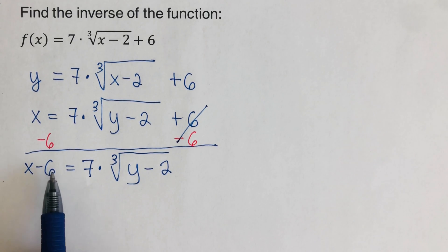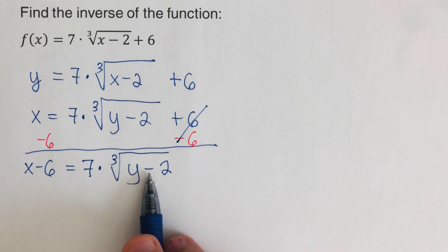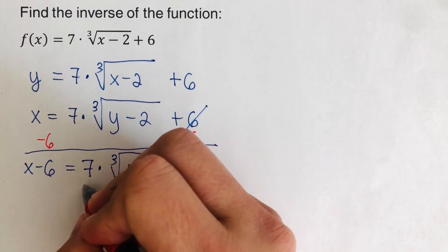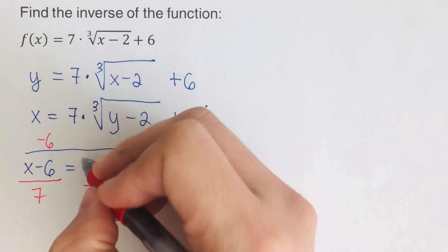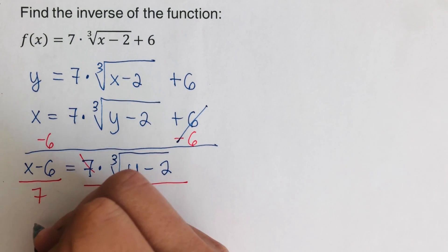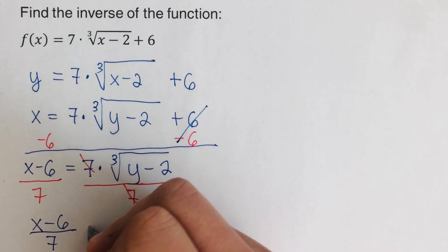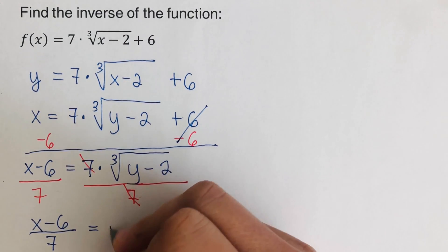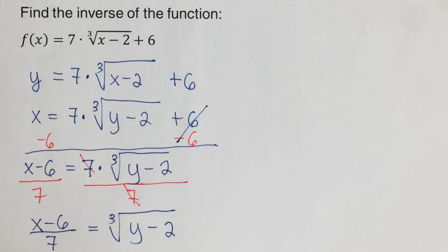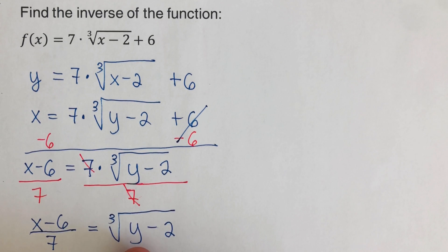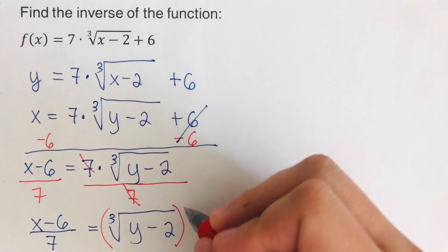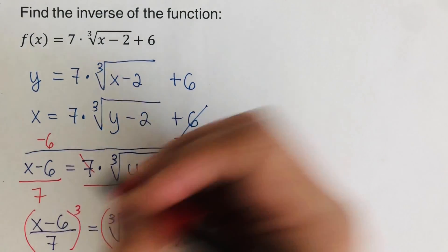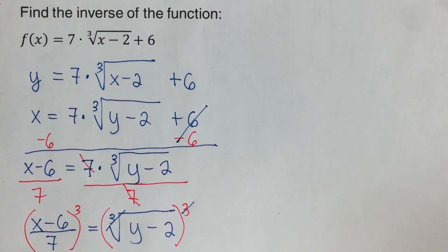We need to clear the right side to get y by itself. Divide both sides by 7 to cross the 7 out: x minus 6, over 7, is equal to the cube root of y minus 2. To undo the cube root, cube both sides — the cube root and the cubed cancel.